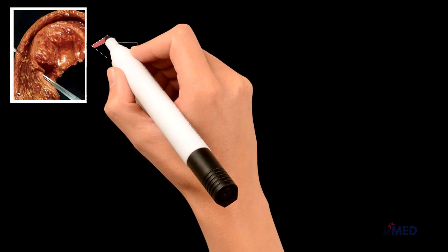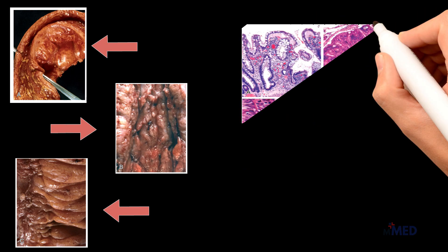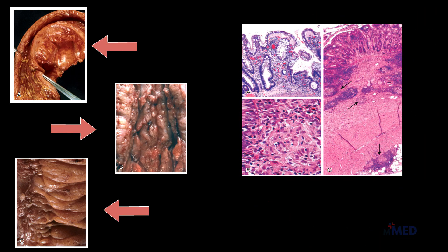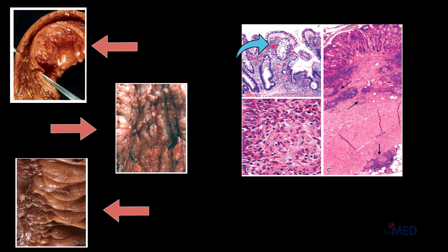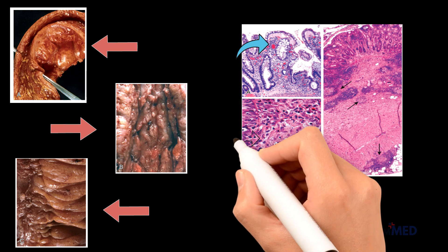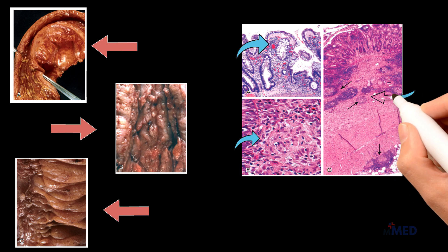In the gross pathology of Crohn's disease, figure A represents a small intestinal stricture, B shows linear mucosal ulcers and thickened intestinal wall with cobblestone appearance, and C shows creeping fat wrapping around the intestines. In microscopic pathology, figure A shows skip lesions, B shows non-caseating granulomas, and C is a slide of transmural Crohn's disease with submucosal and serosal granulomas.